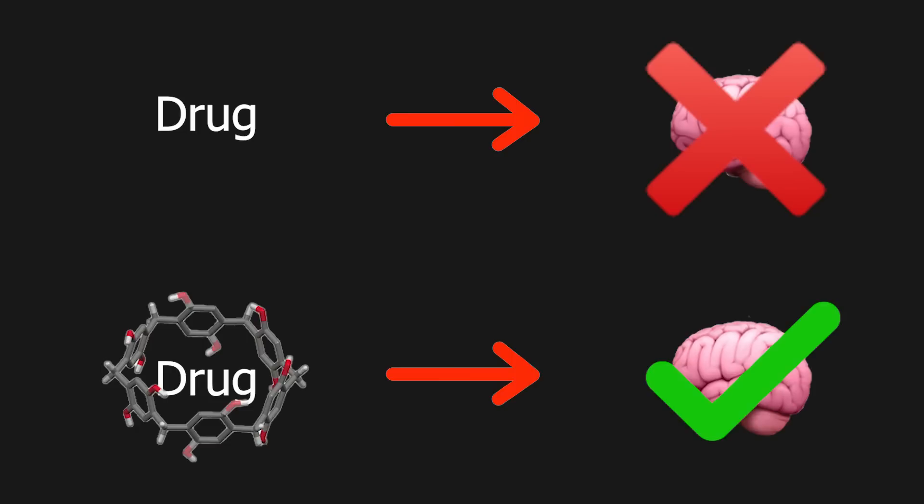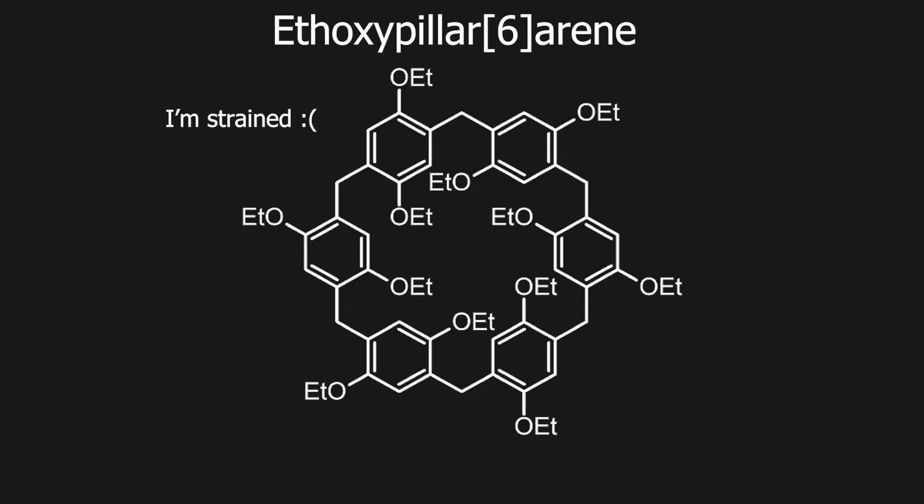Though making pillar-6-arenes has been a challenge since they have significantly more strain than the pillar-5-arenes and would mostly occur as byproducts, which complicate purification of the pillar-6-arenes.